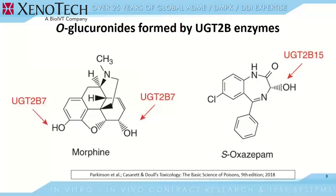O-glucuronides formed by UGT2B enzymes include morphine and S-oxazepam. Two glucuronides of morphine can be formed. At the alcoholic hydroxyl group, the morphine-6-hydroxyglucuronide can be formed — this glucuronide is a powerful analgesic, and the reaction is catalyzed only by UGT2B7 in the brain. On the right-hand side of the molecule, an O3-glucuronide can be formed, which is a deactivating reaction since O3-glucuronide is not an analgesic. This reaction is catalyzed by multiple UGT1A enzymes and also to some extent by 2B7 expressed in liver and other organs.